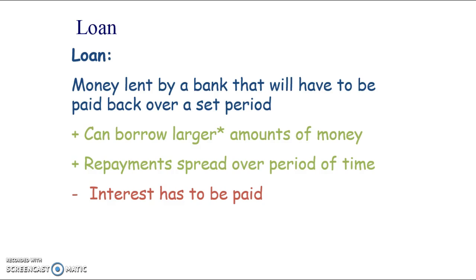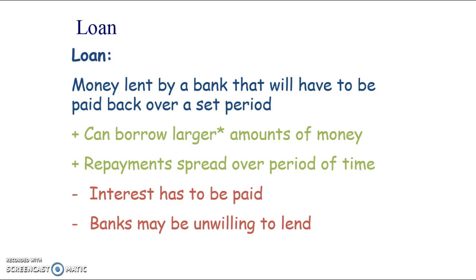However, interest — which is the cost of borrowing — will have to be paid on top of paying back the loan. Interest is really the cost of borrowing and it's the way that banks make their money. Banks may also be very unwilling to lend to small businesses. They may not trust a new business because it doesn't have any sales figures, and they can't be sure the business will be a success and able to meet its repayments. Banks will be very cautious with the people that they lend to.